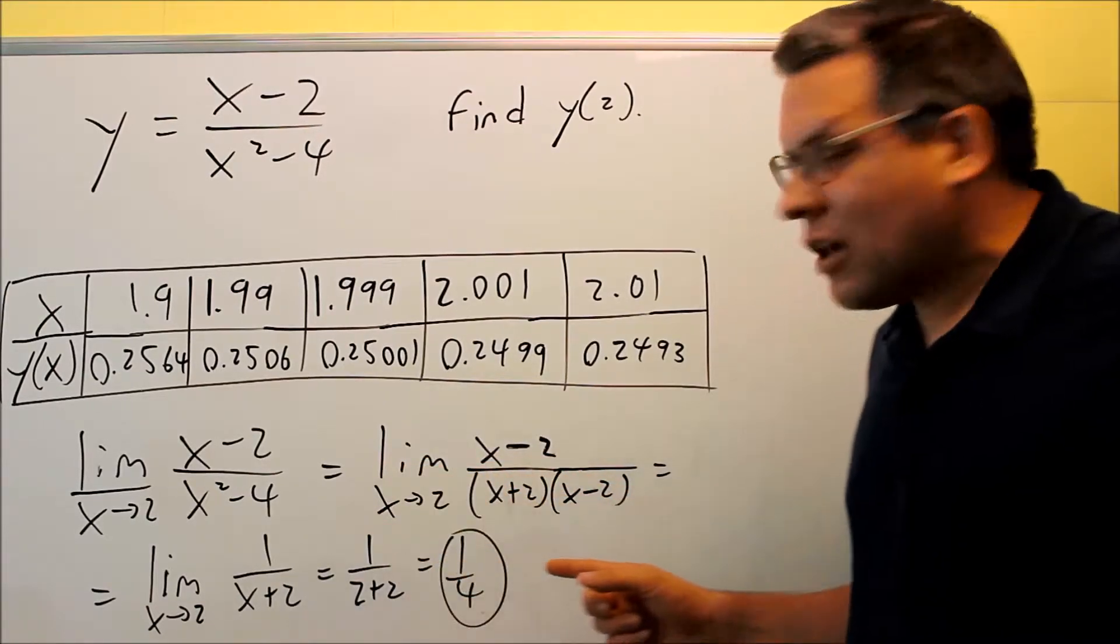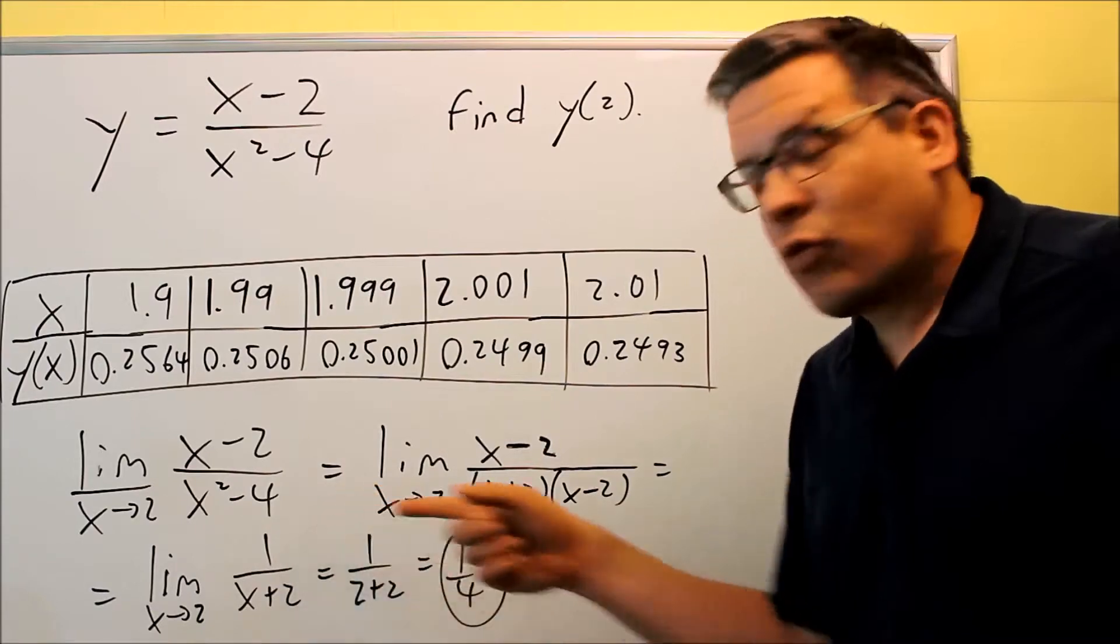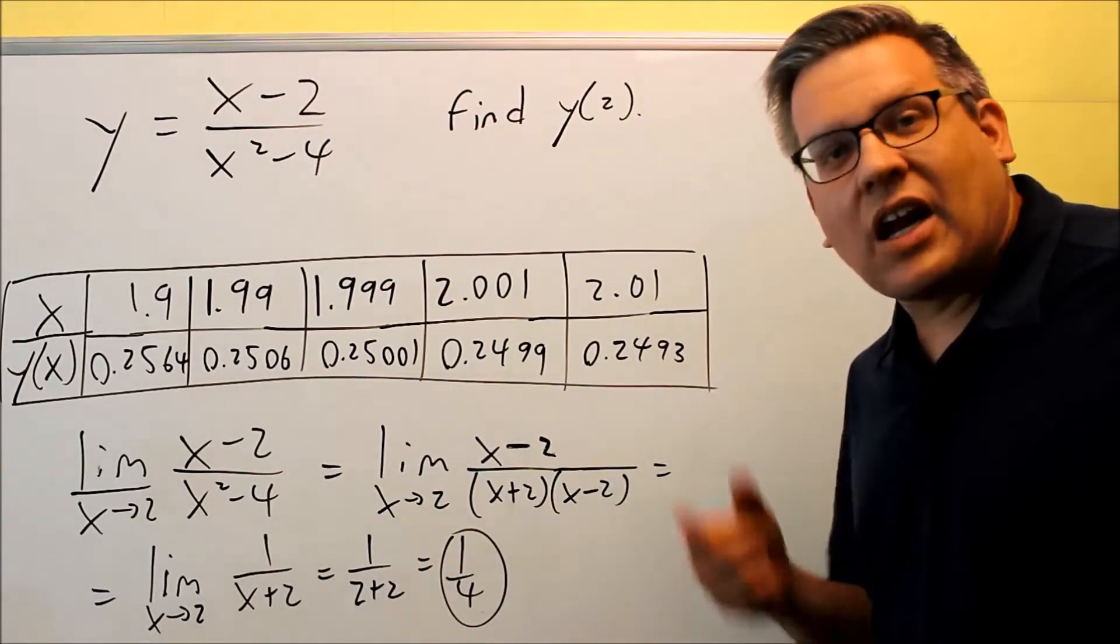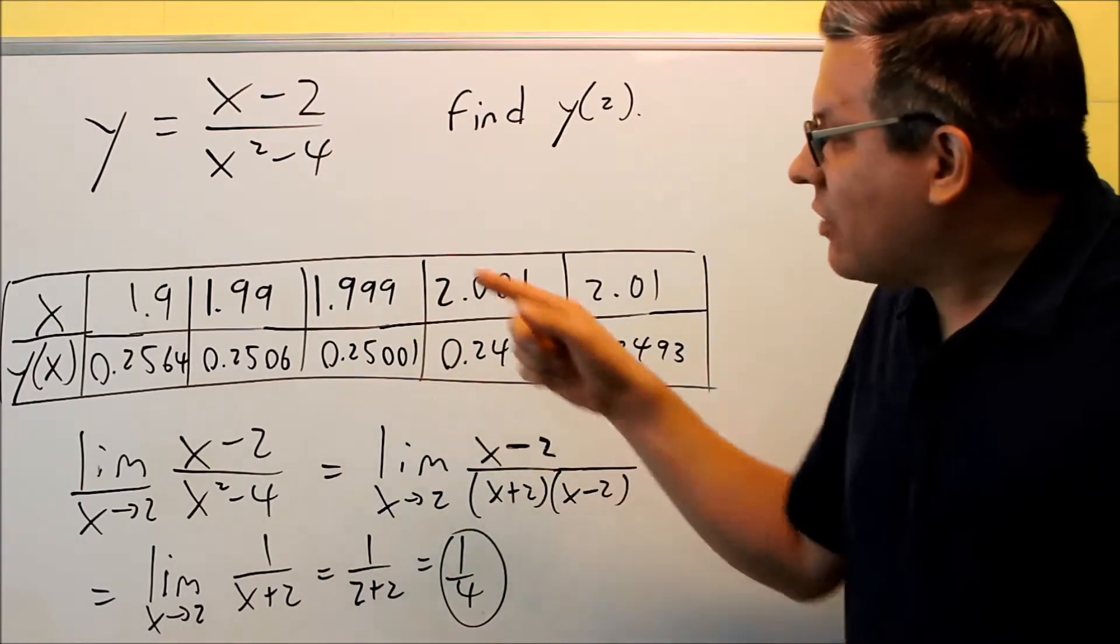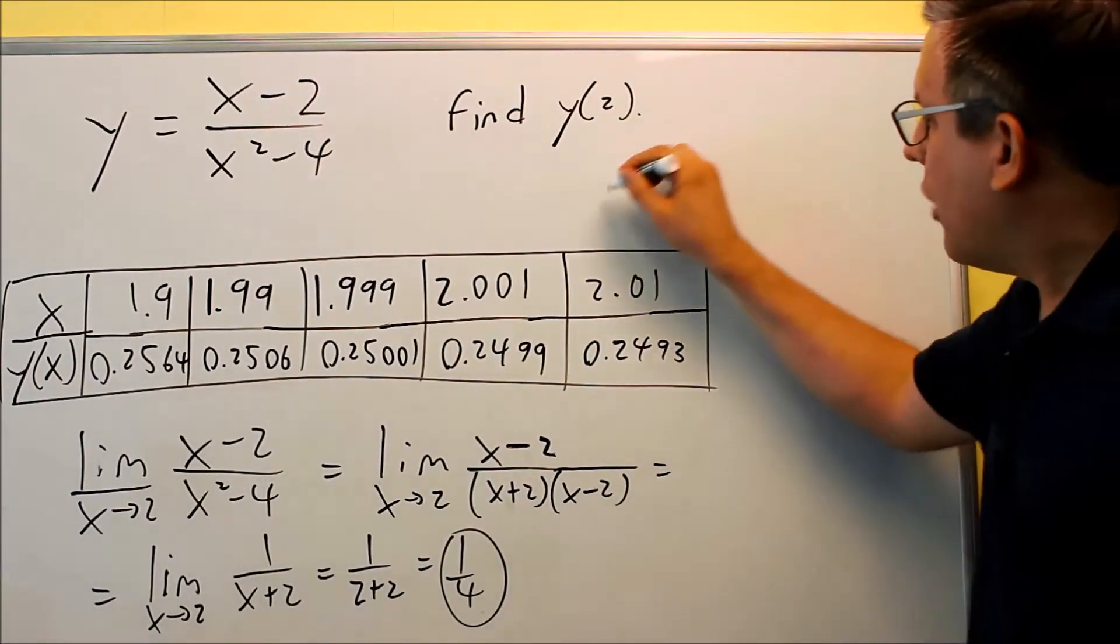If we were to take a look at the graph of this, the graph of this itself would be the graph of 1 over x plus 2, and then I'd have a hole there at the x value of 2. That's basically what the graph would look like.